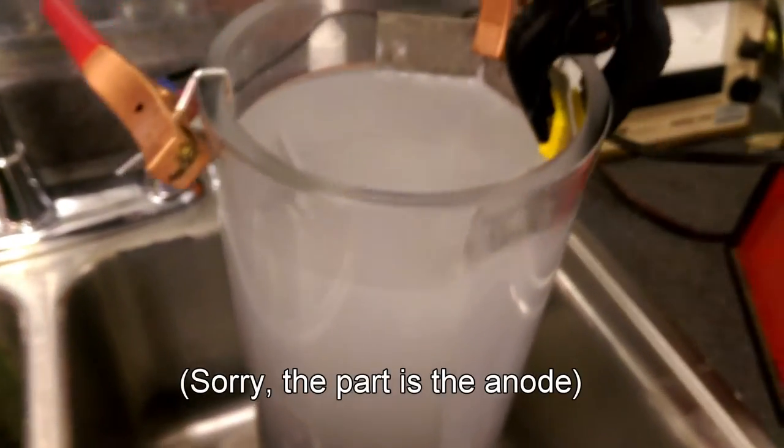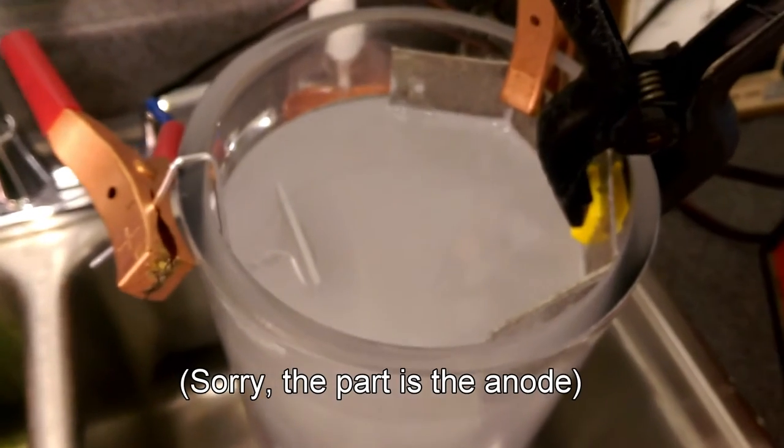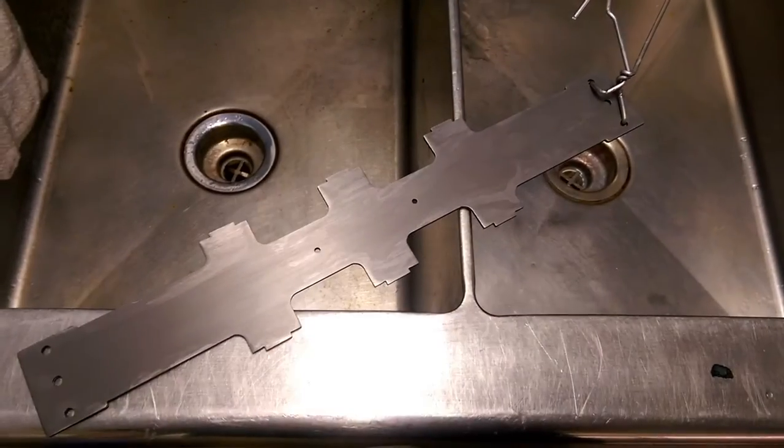We got bubbles coming off of both the cathode over here on the side. I'm sorry, this is the anode and then the cathode is the aluminum piece in this case. You can see the foam coming up through here. We're gonna give this about 40 minutes and see if we can dye it and perhaps harden it.